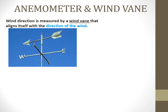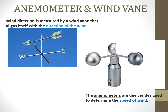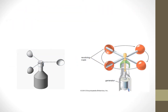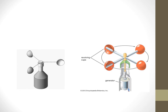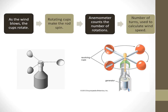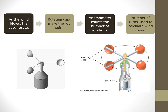The direction of wind is measured by a wind vane that aligns itself with the direction of the wind. The device used to determine the speed of the wind is called an anemometer. Anemometers can have three or four cups; the force of the wind causes the cups to spin, and the spinning rate is proportional to the wind speed. As the wind blows, the cups rotate making the rod spin — the stronger the wind, the faster the rod spins. The anemometer counts the number of rotations, which is used to calculate the speed of the wind.